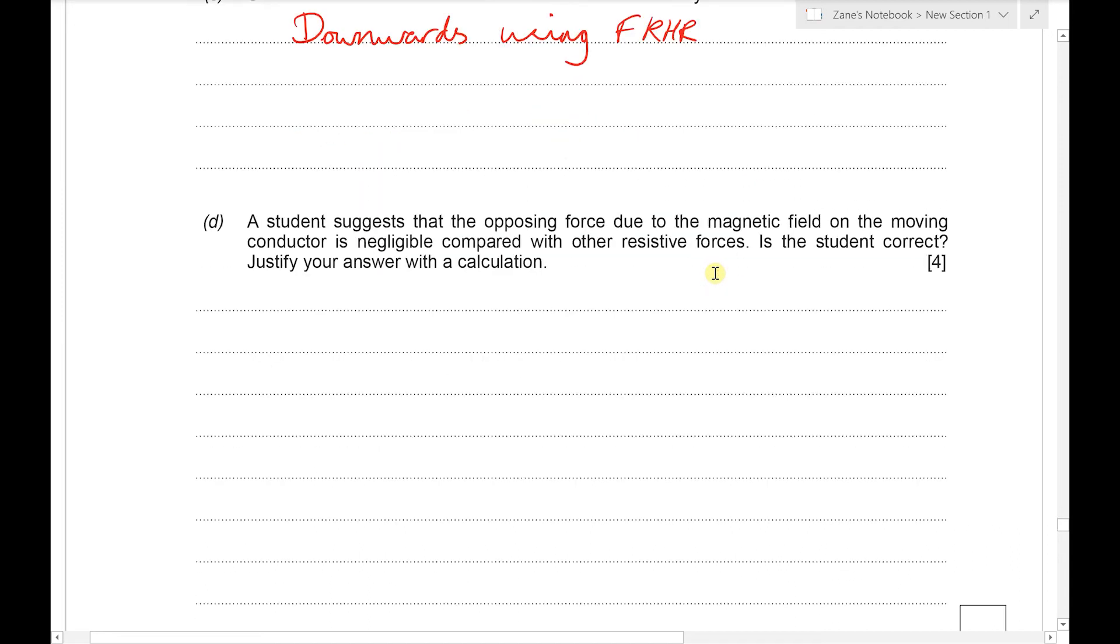Finally, a student suggests that the opposing force due to the magnetic field on the moving conductor is negligible compared to the other resistive forces, and is the student correct? And we're going to justify our answer with a calculation. Let's calculate the size of that magnetic force. So F equals BIL, technically BIL sin theta but the sin theta bit will be 1 because all the motion is perpendicular to the field.